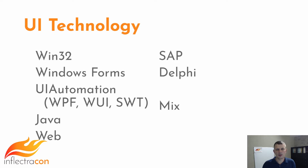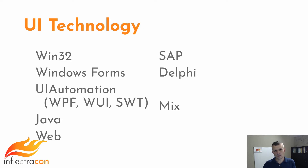There are a number of technologies used to build the UI on the desktop, and Rapise has a number of tools to deal with these technologies. Let's consider a number of example applications built with different technologies and see how and what we may use to deal with them.